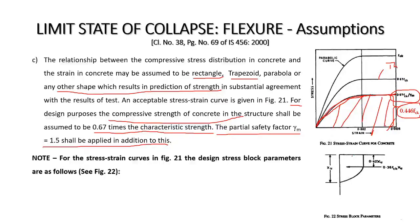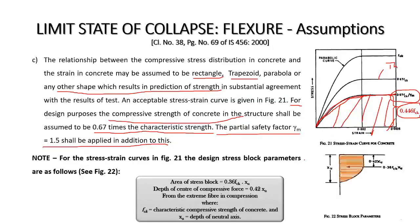The stress block can be represented as shown in figure number 22 of IS 456. The area of the stress block is taken as 0.36 fck × xu. The compressive force acts at the centroid of this stress block, and the distance of this centroid from the extreme compression fiber equals 0.42 xu, where xu is the depth of the neutral axis and fck is the characteristic strength of concrete. These are the stress block parameters as per clause 38 of IS 456.